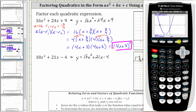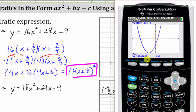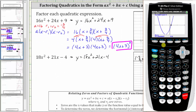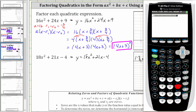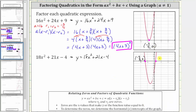Now let's determine the ordered pair for the second horizontal intercept. We press second trace for the calculation menu, option two for zero. Move right so we're closer to the left side of this horizontal intercept, press enter. Right bound, move to the right side, press enter, then enter again. Notice the zero is 0.16 repeating. We may not recognize this decimal, so we go back to the home screen by pressing second mode, enter 0.16 repeating, and convert to a fraction by pressing math, enter, enter, which gives us 1 sixth. So the ordered pair for the second horizontal intercept is 1 sixth comma zero. We now know a equals 18, r sub one equals negative 4 thirds, and r sub two equals positive 1 sixth.